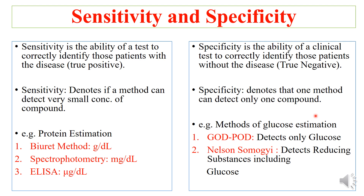An example for specificity is the parameter serum glucose. The glucose oxidase-peroxidase (GOD-POD) method is an enzymatic method, and this enzyme detects only glucose. So it is a very specific method for glucose — no compound similar to glucose will be detected. For example, it cannot react with fructose, mannose, or galactose. So GOD-POD is specific for glucose.